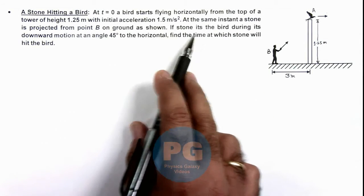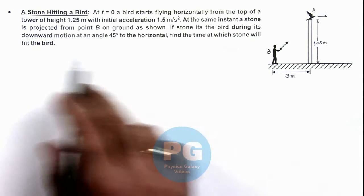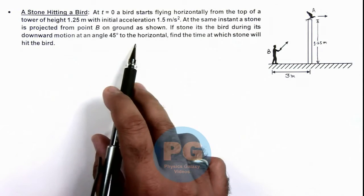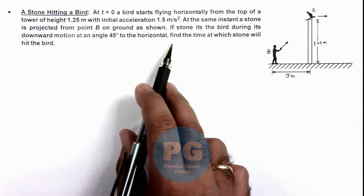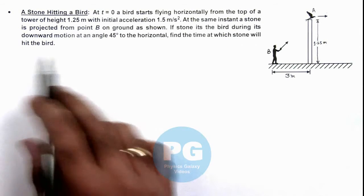If the stone hits the bird during its downward motion at an angle 45 degrees to the horizontal, we are required to find the time at which the stone will hit the bird.